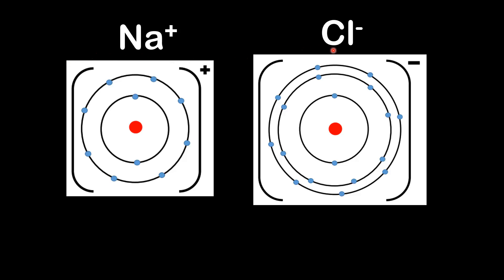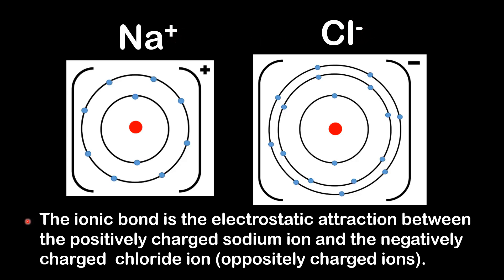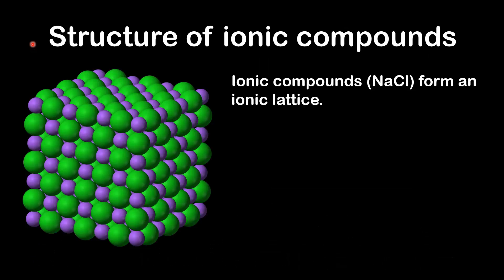On the left we have a sodium ion and on the right we have a chloride ion. The sodium ion has a positive charge and the chloride ion has a negative charge. So the ionic bond is the electrostatic attraction between the positively charged sodium ion and the negatively charged chloride ion — they are oppositely charged ions.